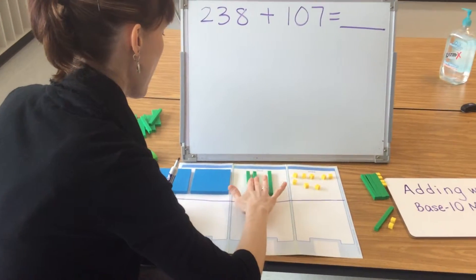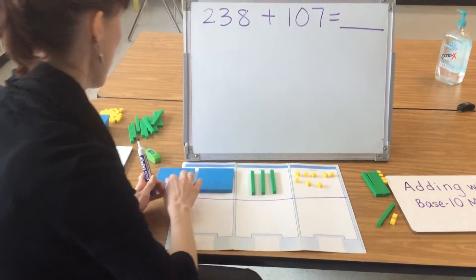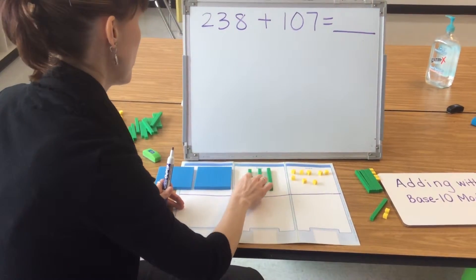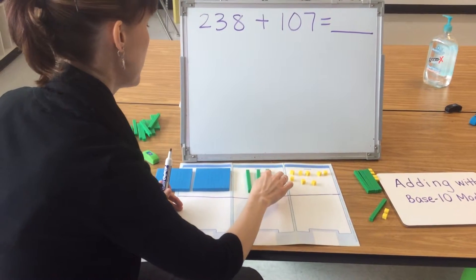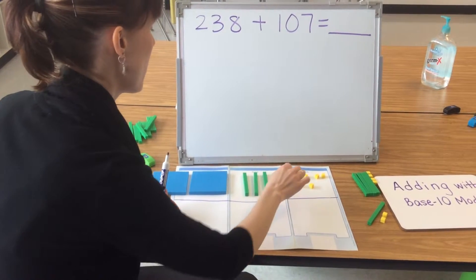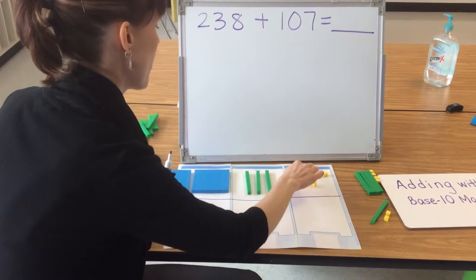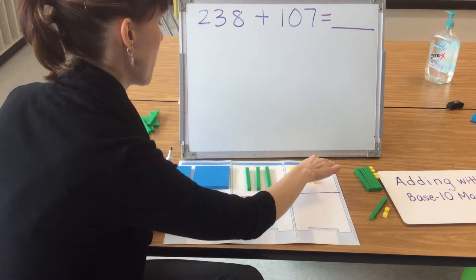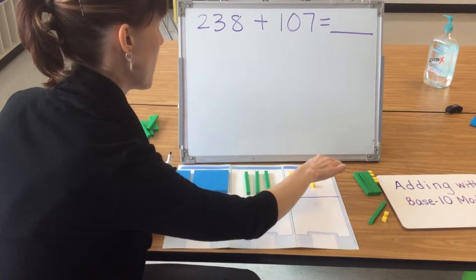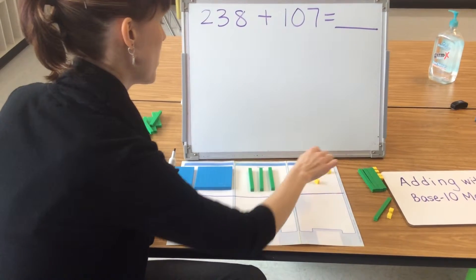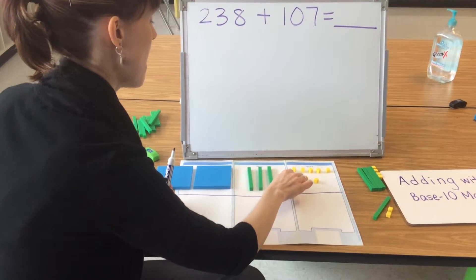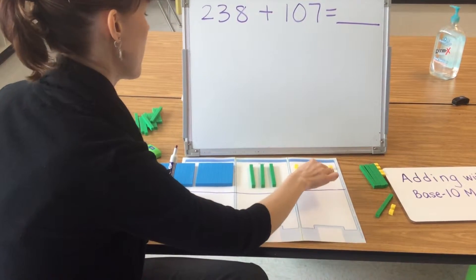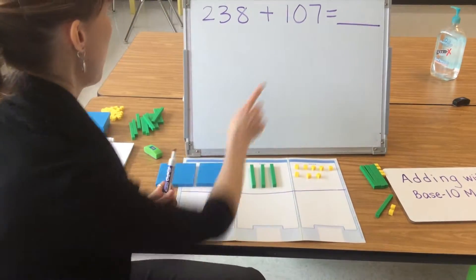I want to make sure I have the correct amount: 100, 200, 210, 220, 230, 231, 232, 233, 234, 235, 236, 237, 238.